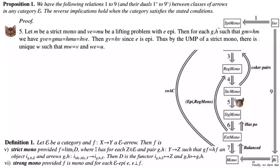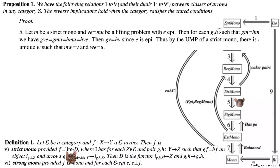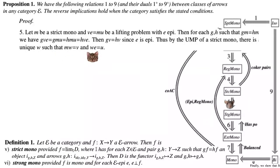For (5): let M be a strict mono and let VE = MU be a lifting problem with E epi. For each G, H such that GM = HM, we have GVE = GMU = HMU = HVE, so GV = HV since E is epi. By the universal mapping property of a strict mono, there is a unique W such that MW = V and WE = U.